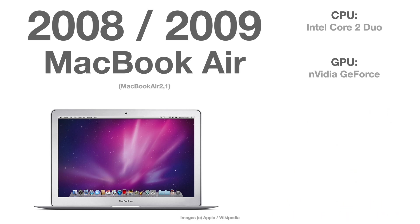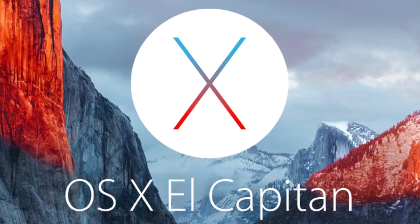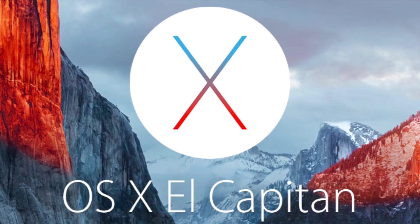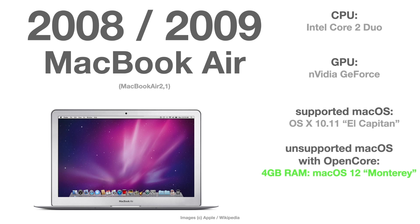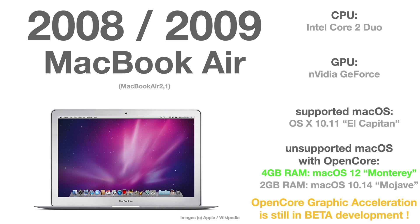The 2008 and 2009 MacBook Air series 2 is only officially supported up until OS X 10.11 El Capitan. But with 4 GB of RAM, you can use OpenCore to bring this MacBook Air up to macOS 12 Monterey. Otherwise, same as before — 2 GB of RAM, stay with macOS 10.14 Mojave.